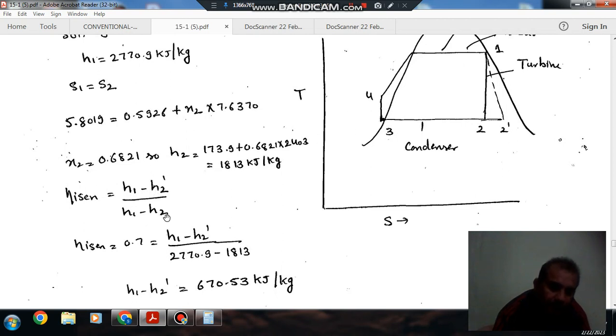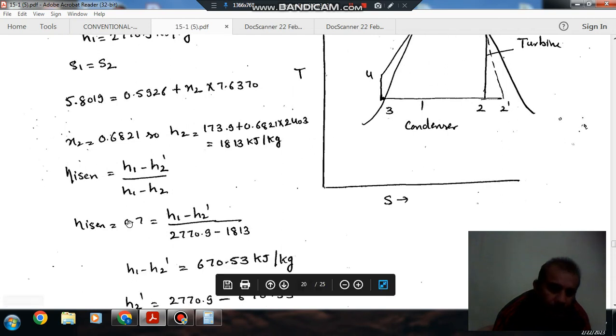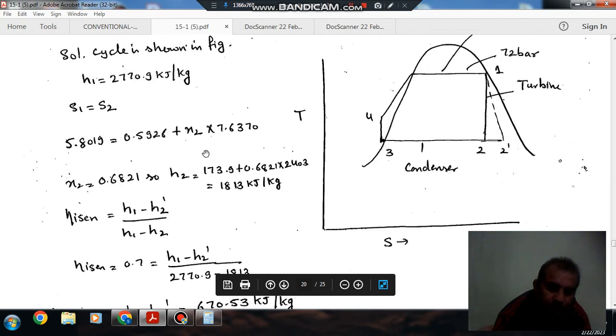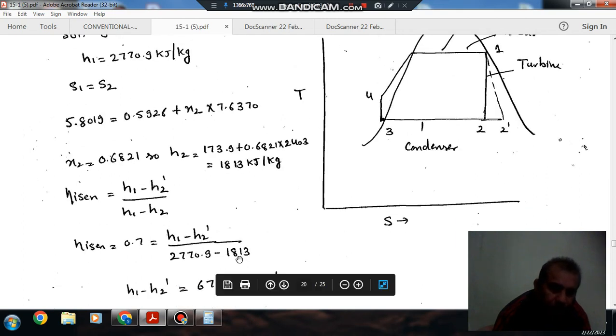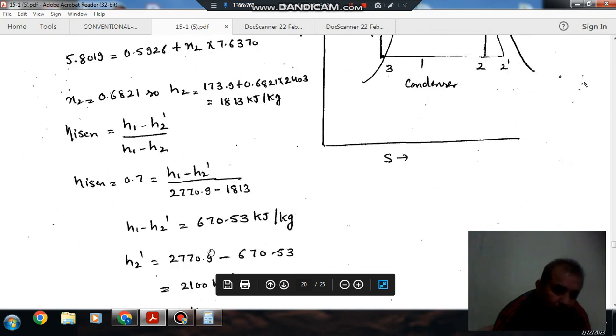Isentropic efficiency: h1 minus h2 dash is isentropic and h1 minus h2 is actual. The efficiency is given as 0.7. H1 is 2770.9 and h2 dash is 1813, so we can find out h1 minus h2.